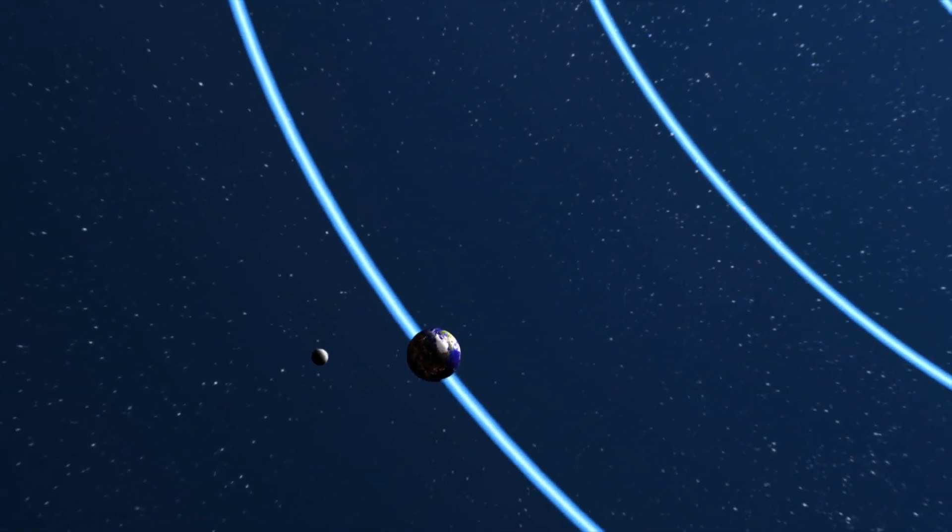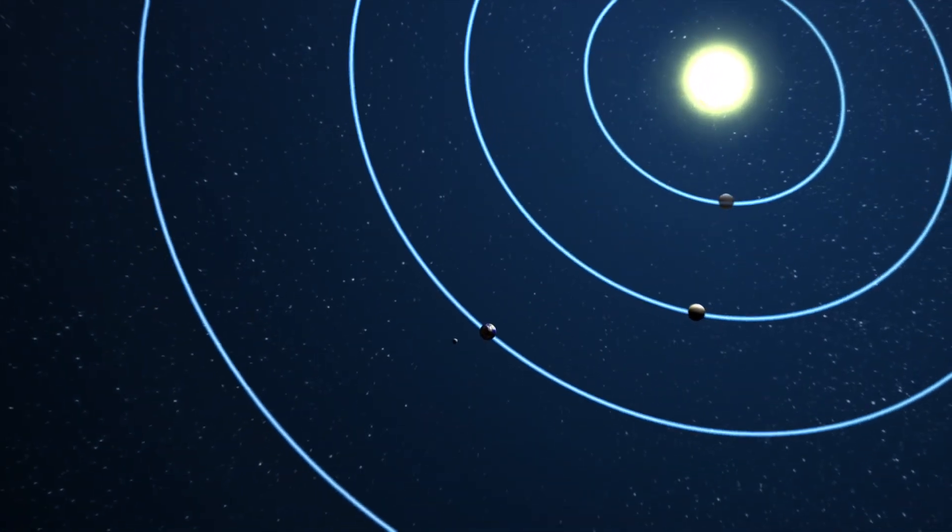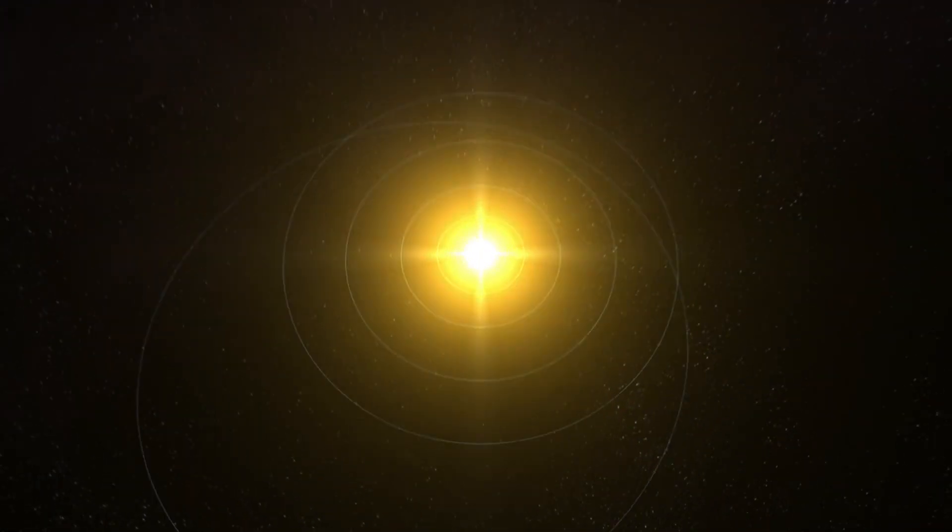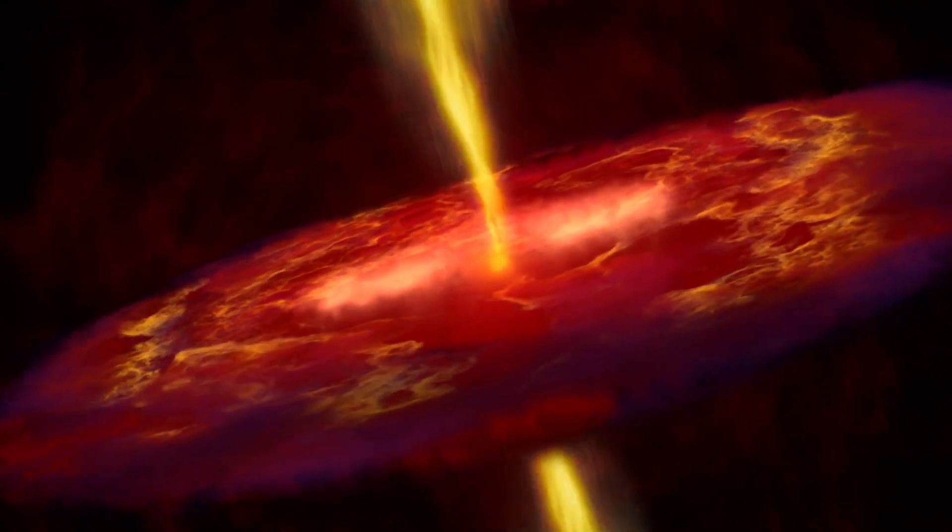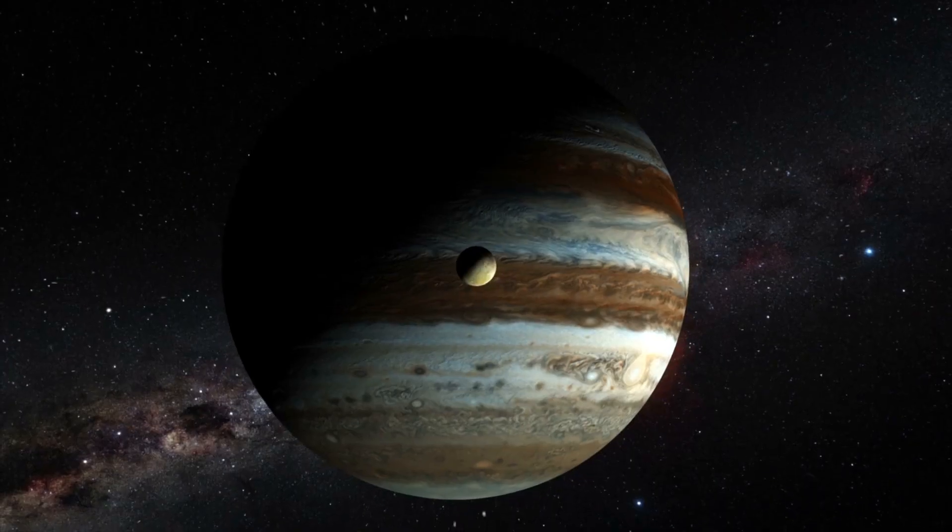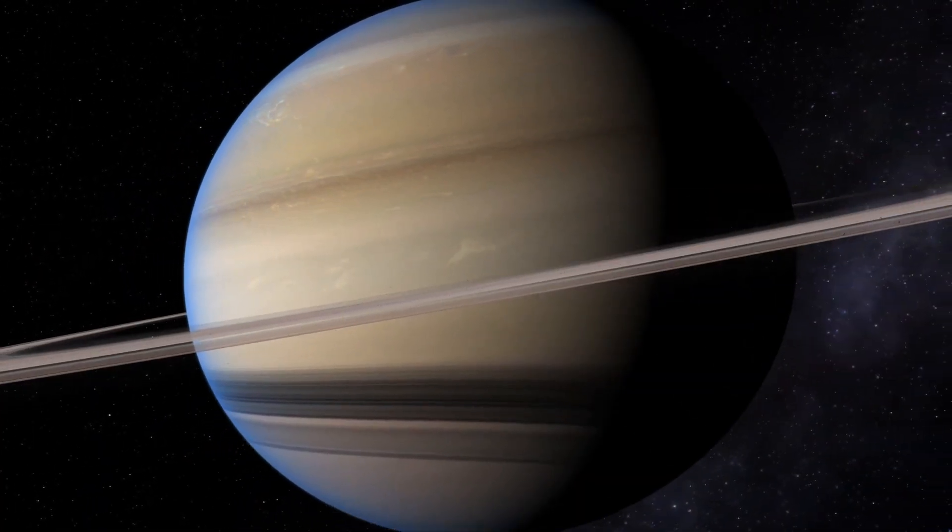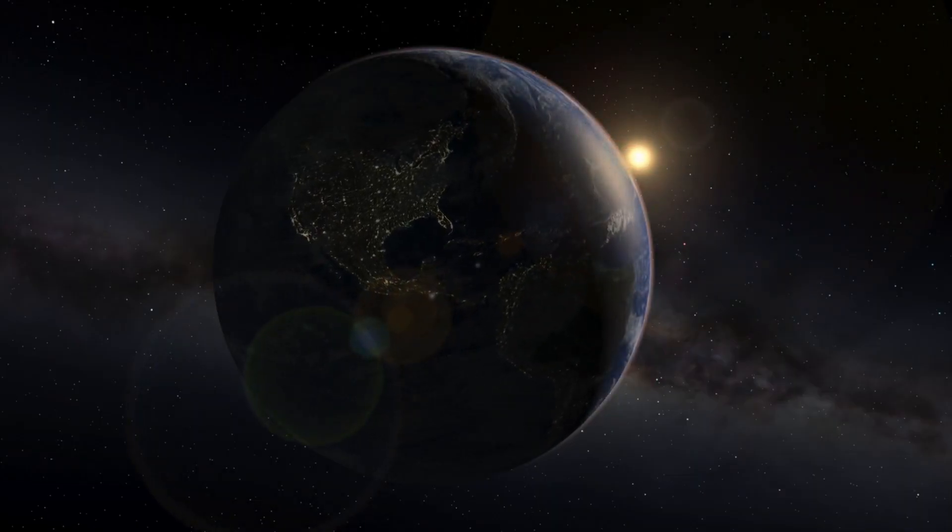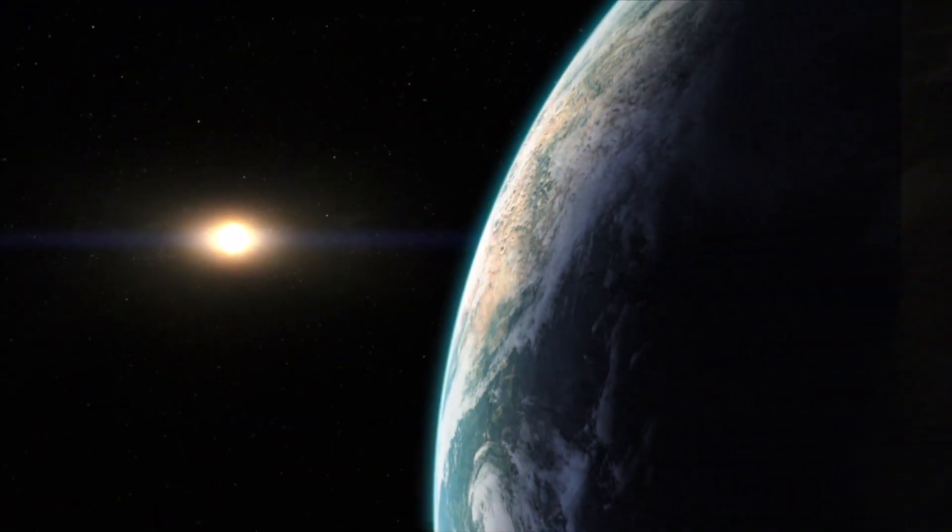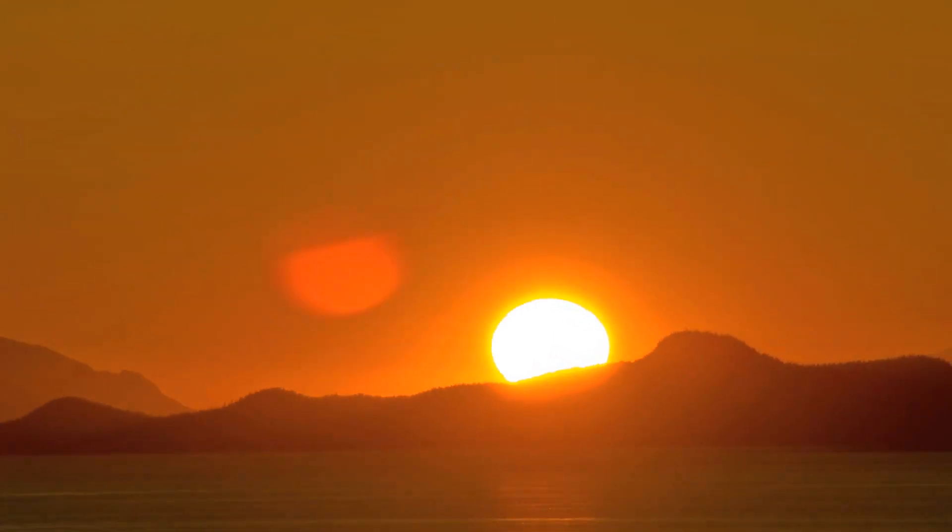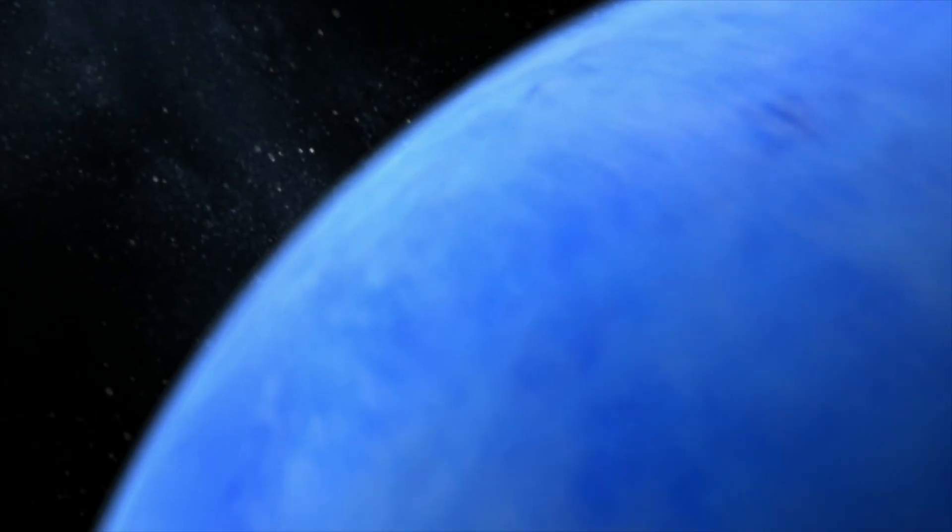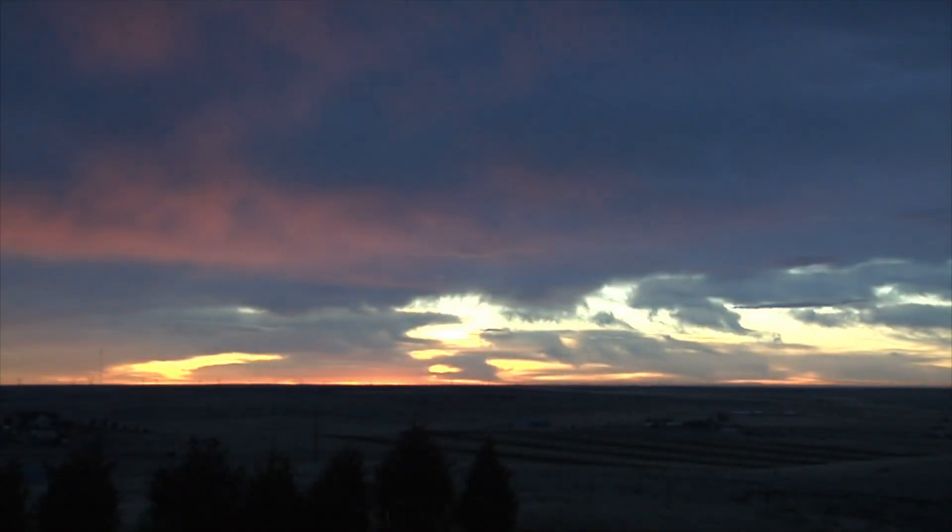Our solar system is full of oddities pointing to an imperfect birth and a malformed evolution. All of our planets go around the sun in the same direction that the sun is spinning. Six planets spin around their poles in the same direction. Yet two planets spin the opposite direction. For Venus and Uranus, the sun rises in the west and sets in the east.